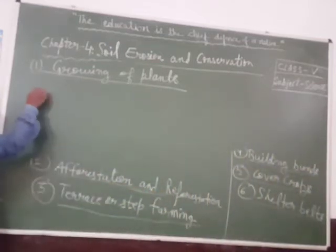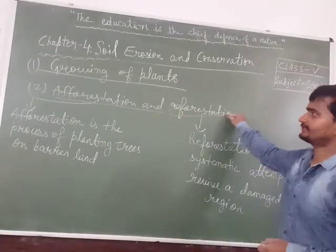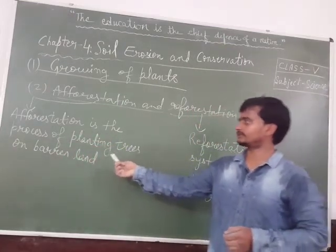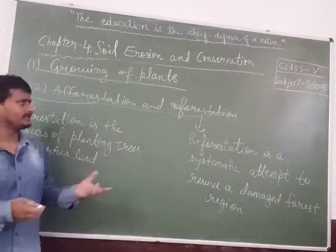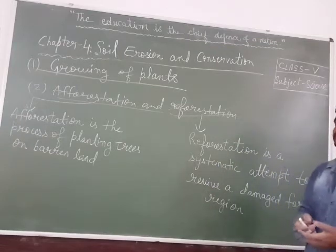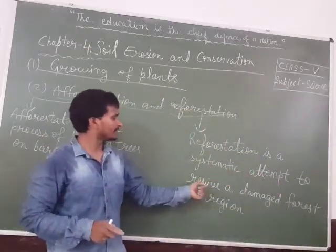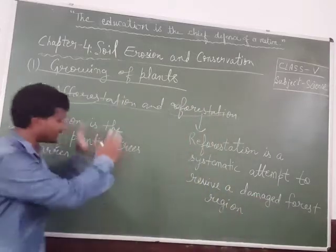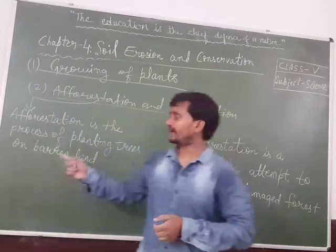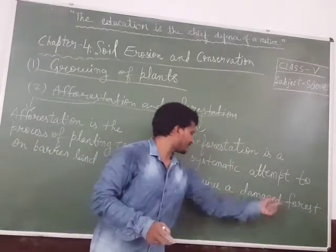The second method is aforestation and reforestation. Aforestation is the process of planting trees on barren land — growing more plants to conserve and protect the soil. Reforestation is a systematic attempt to revive a damaged forest region. In aforestation we create a new forest region by planting more trees, whereas in reforestation we systematically revive an already damaged forest region.